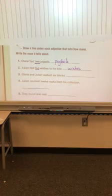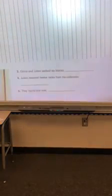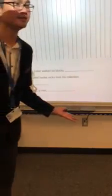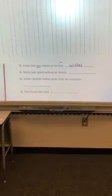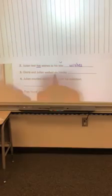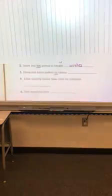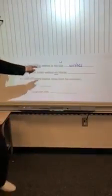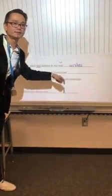Okay, number three. Gloria and Julian walked six blocks. Which one is adjective? Six. So underline six, because six is a number and the number is special adjective. You need to work now so you can catch up with us. We are on number three already. Underline six. And which noun should we write here? Blocks. Tell more about the blocks. Six blocks.